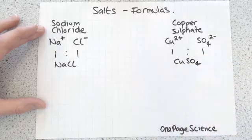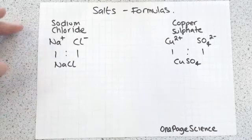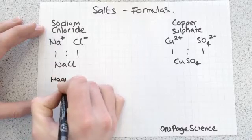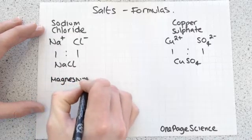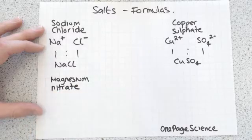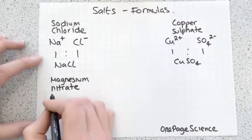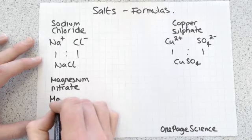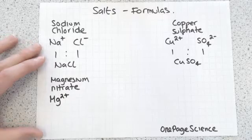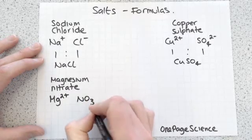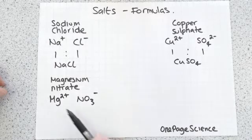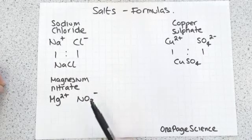Let's try another one. This time we're going to go for magnesium nitrate. Again, get your periodic table. You'll find that magnesium is Mg2+ and a nitrate is NO3-.